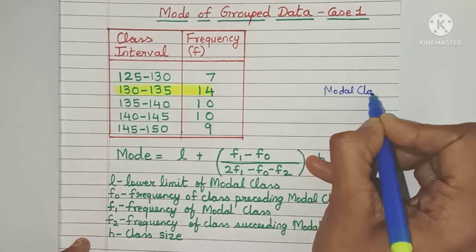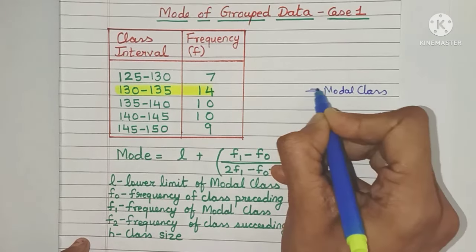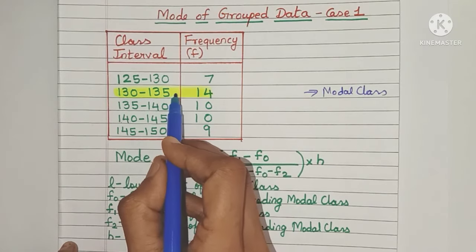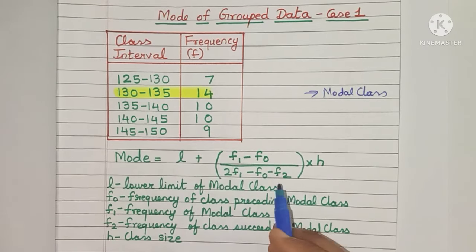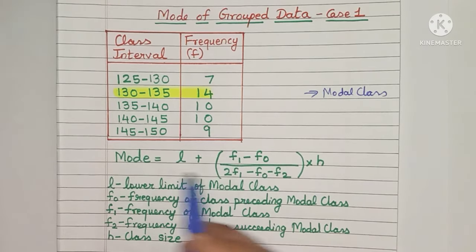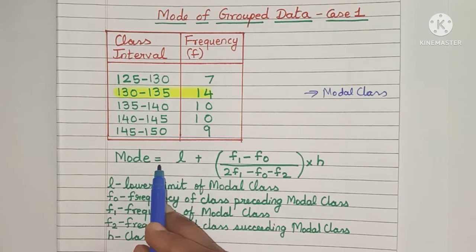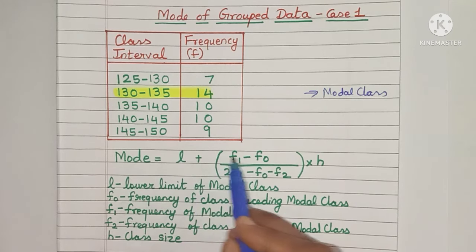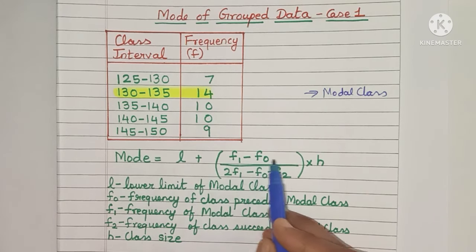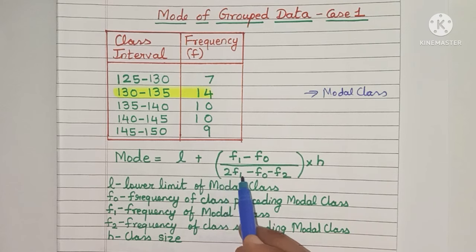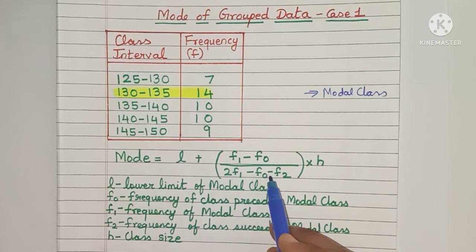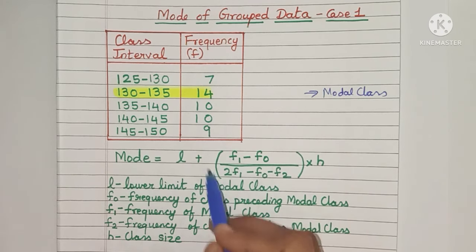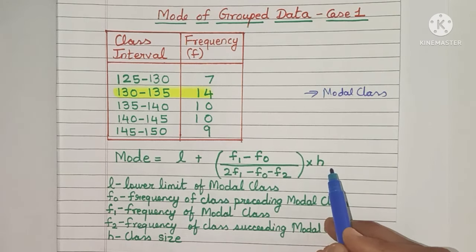What is it called? The modal class — because it will surely contain the mode value. Now the formula to calculate the actual mode value is: L plus (F1 minus F0) divided by (2F1 minus F0 minus F2), whole times H.